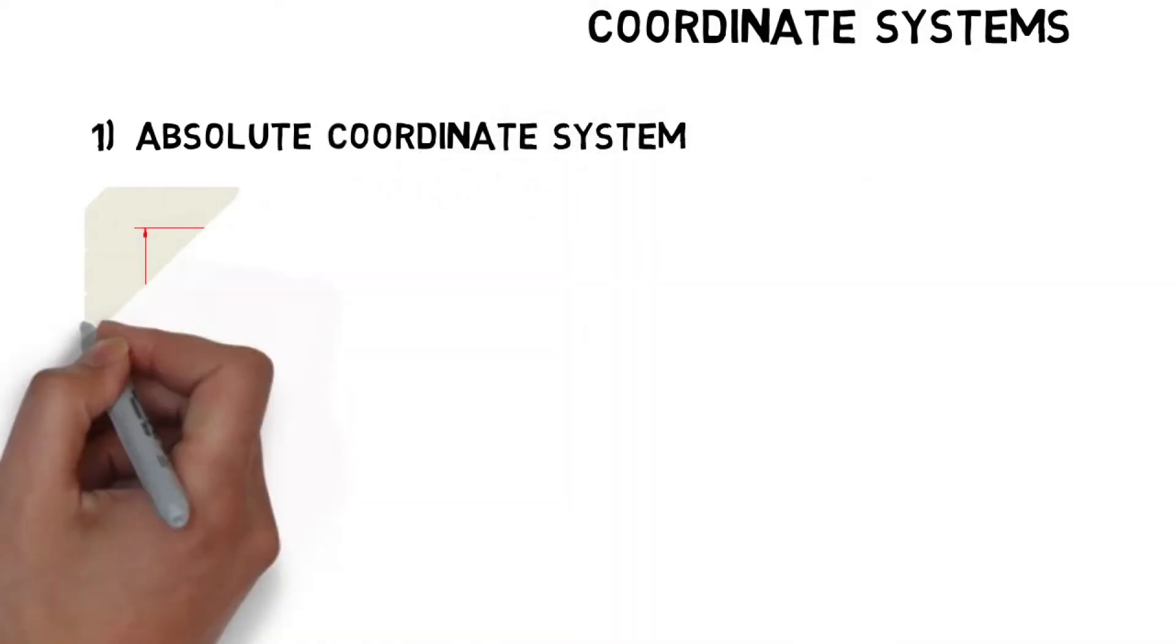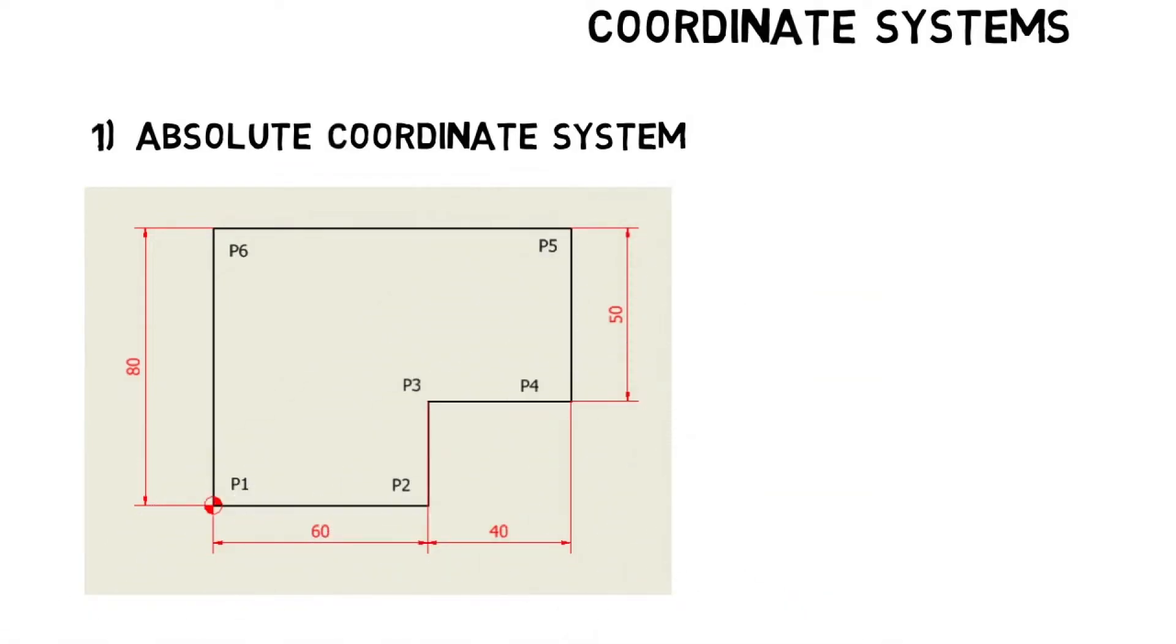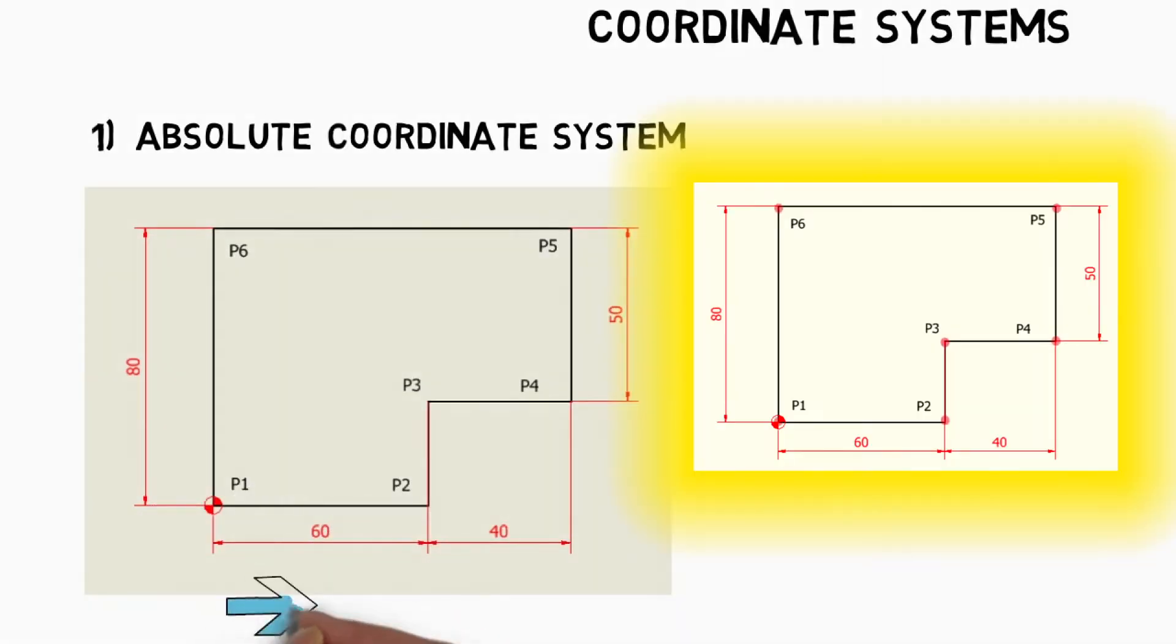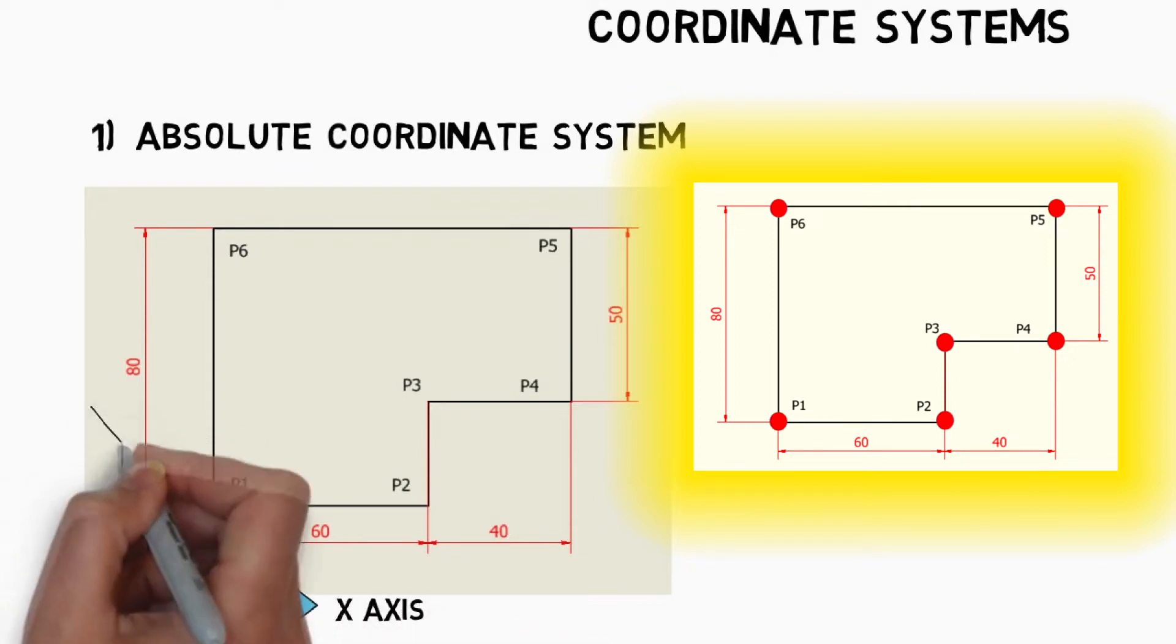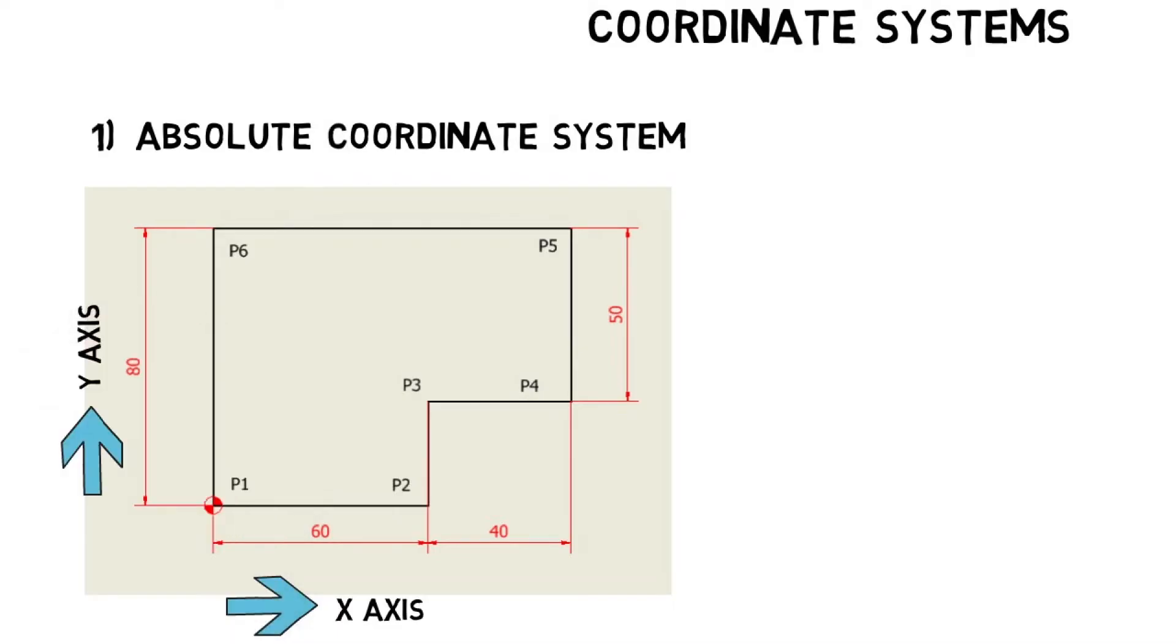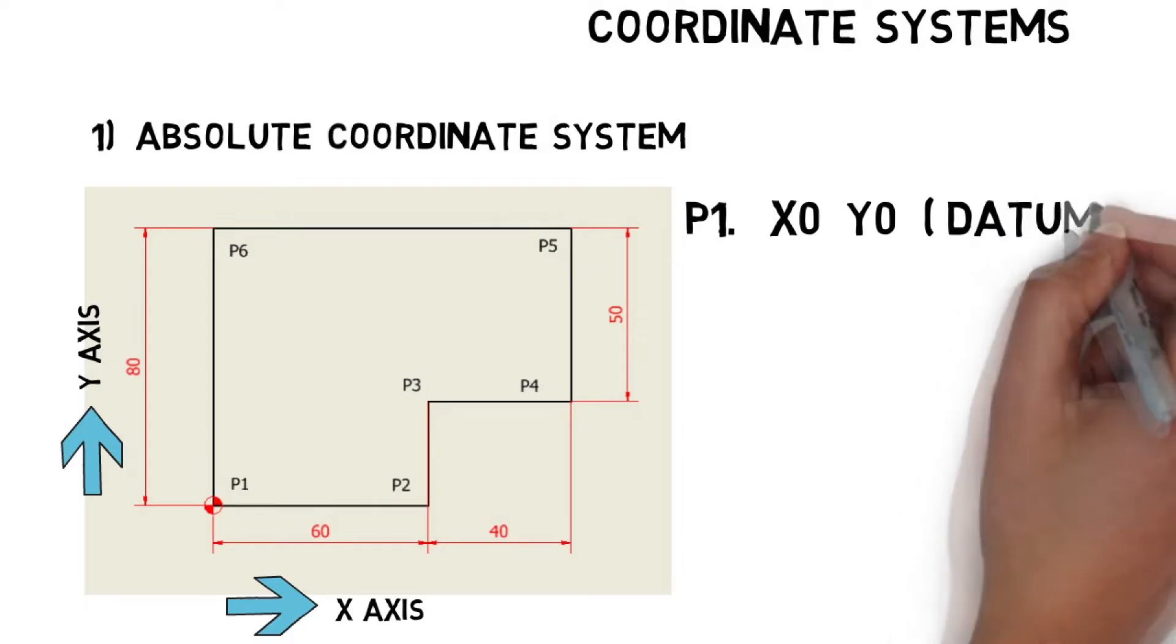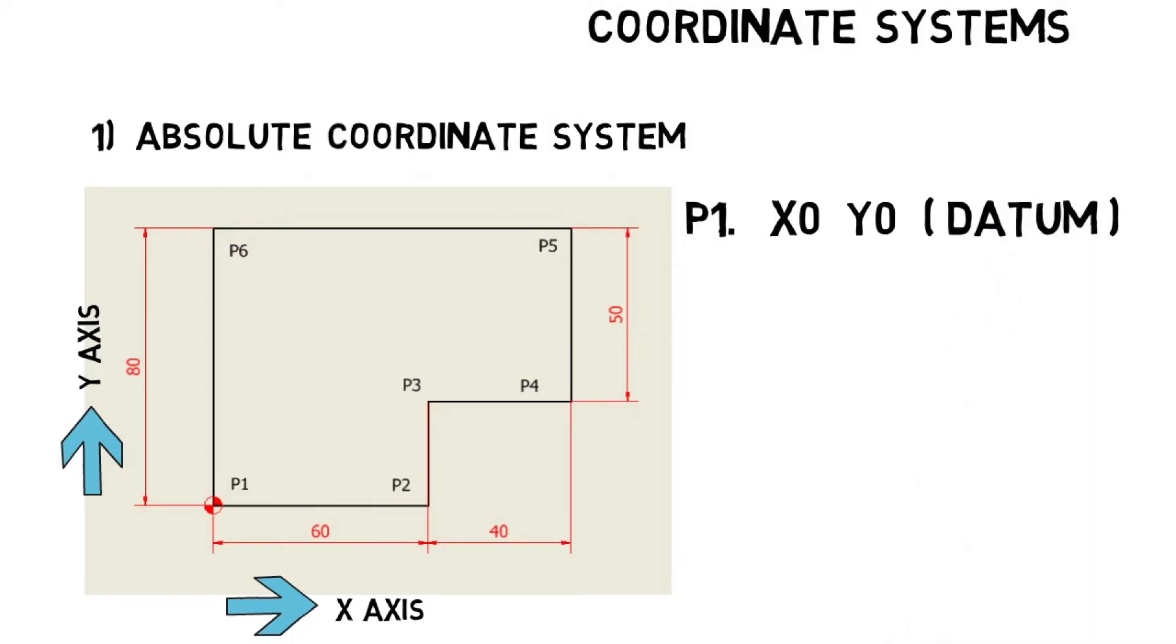First we will explain the absolute coordinate system with an example. In this drawing, we need to find out the coordinate values of each points by using absolute coordinate system. Point number 1, that is P1, is the origin reference point for this drawing. So values of P1 is X0 and Y0.